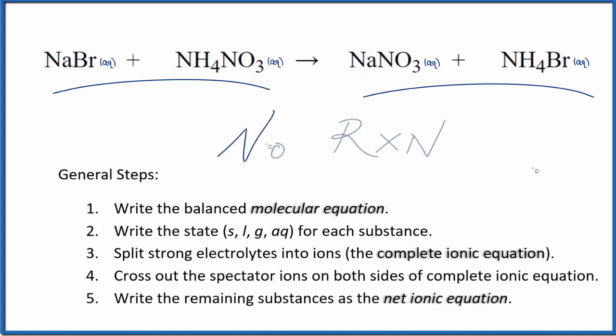This is Dr. B with the balanced net ionic equation for NaBr plus NH4NO3, sodium bromide and ammonium nitrate. Except there's no reaction because everything starts out soluble and it remains soluble. Thanks for watching.